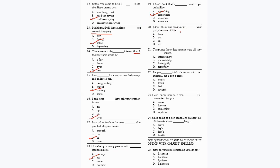Question 20: 'I don't think you need to call dash your party because of this.' The phrasal verb 'call off' means to cancel: 'I don't think you need to cancel your party because of this,' so the answer is 'call off' — option B.